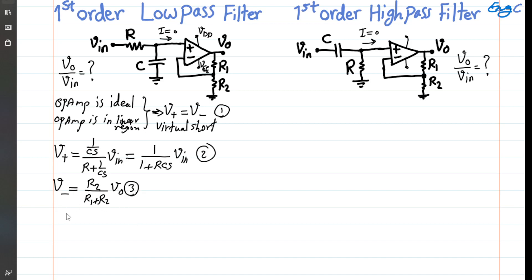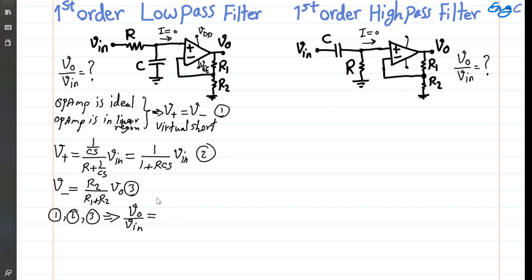Using equations one, two, and three, we set the positive and negative terminal voltages equal to each other, meaning equation two equals equation three. Reshuffling terms, we get Vout over Vin equal to (1 plus R1 over R2) times the numerator R1 plus R1/R2, divided by 1 plus RCs.